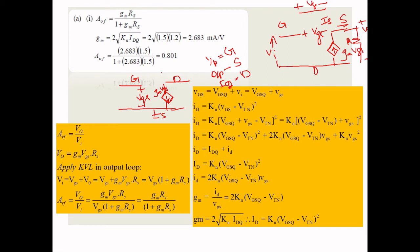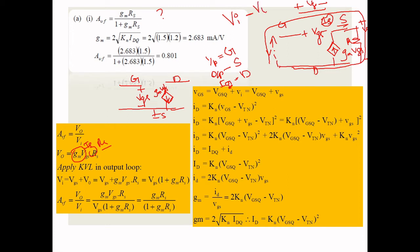To derive the transfer function, AVF = output voltage / input voltage. The output voltage is the current into the output resistance: IS × RS. To find VA, apply KVL around the outermost loop. Applying KVL gives: VA = V0 + VGS. But V0 = GM·VGS·RS, so rearranging: VA = VGS(1 + GM·RS).